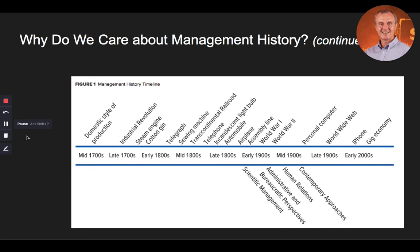Figure 1 depicts a timeline of historical events and the corresponding broader perspectives of management that we will discuss in this lesson. This timeline covers the development of the domestic style of production in the mid-1700s, all the way through developments in the Industrial Revolution, inventions made over time, world events such as the World Wars, the development of the PC and the World Wide Web, all the way into the current day economy. In summary, understanding management history helps students learn the various perspectives of managerial thought, some of which present a simplistic view of what it takes to be an effective manager. It provides a basis for learning about organizational policies and practices, and gives students a broad base of ideas from which they can draw to deal with managerial challenges they will face in their careers.